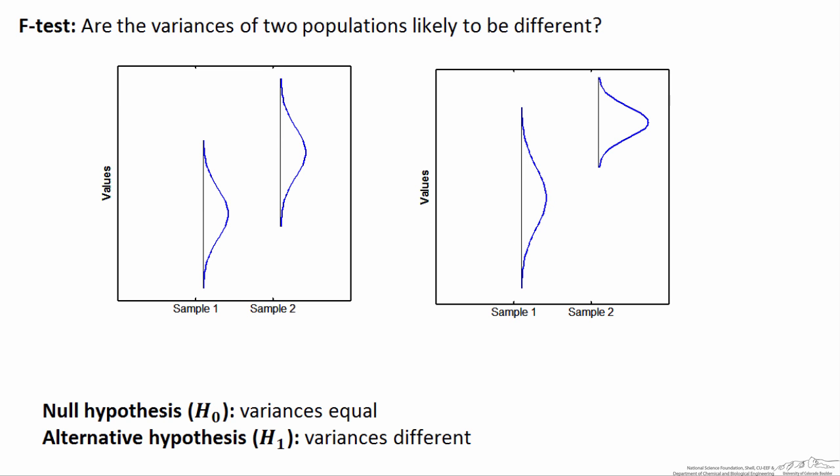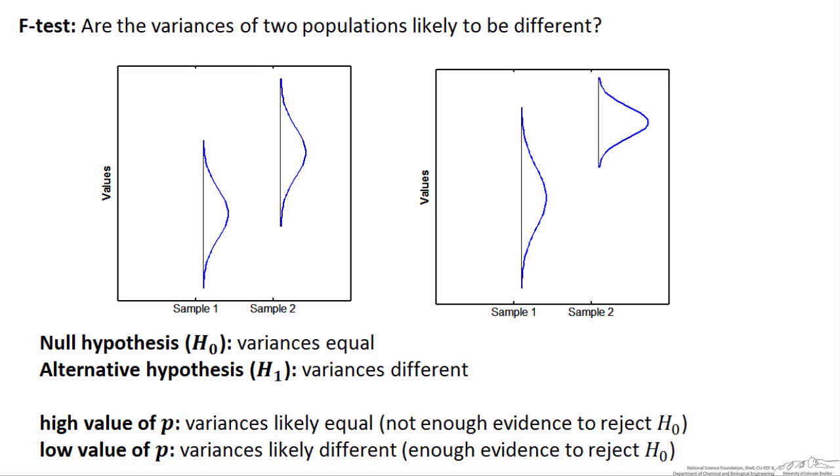When you conduct an F-test, you're contrasting a null hypothesis in which the variances are equal versus an alternative hypothesis in which we believe the variances are actually different. When you run the F-test, you'll come up with a p-value that gives you evidence for or against the null hypothesis. If the value of p is high enough, the variances are likely equal — we don't have enough evidence to reject H-naught. However, if p is below our arbitrarily defined value of alpha, then the variances are likely different, and we have enough evidence to reject H-naught.